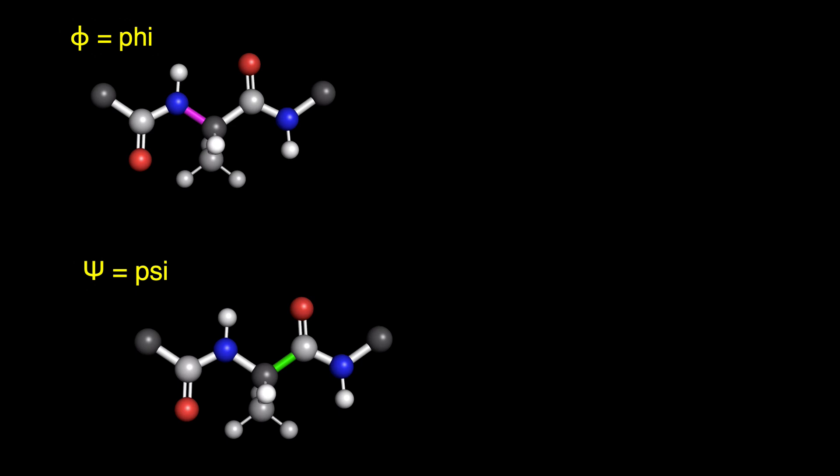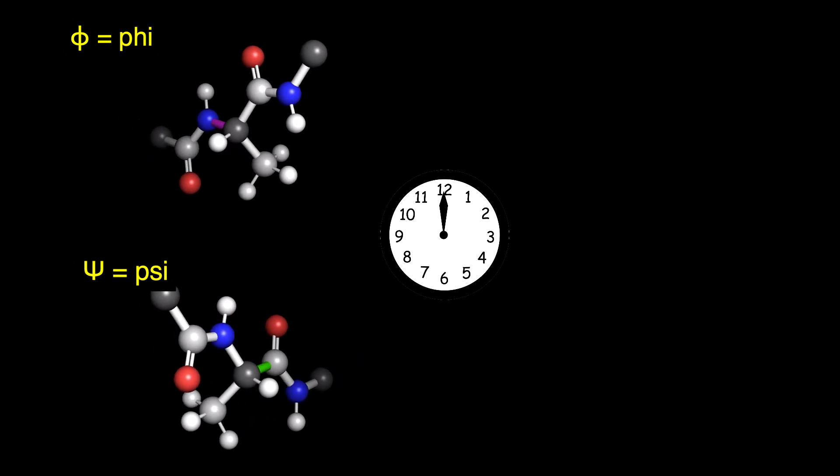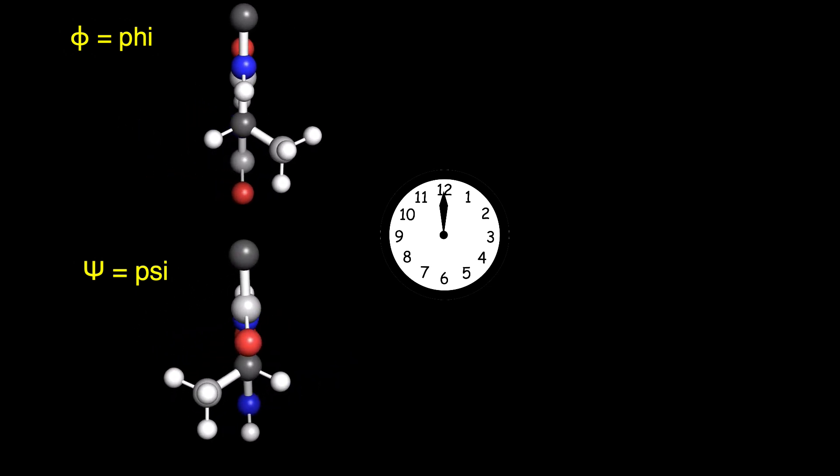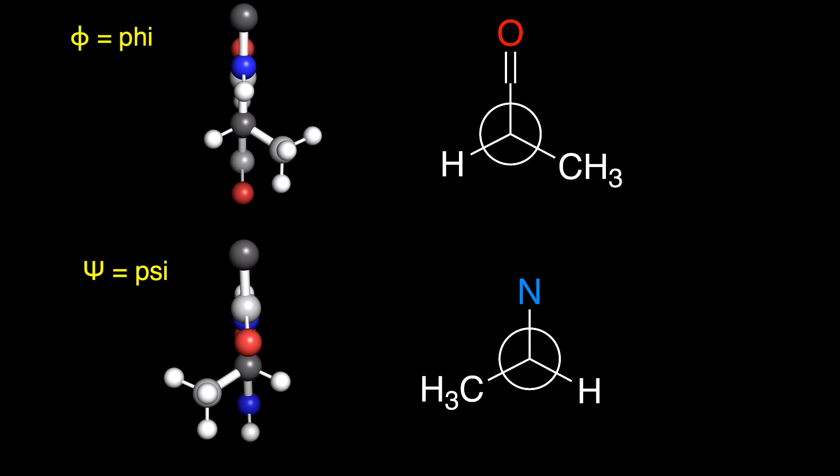To translate this to our Newman projection, we can imagine the model as a clock. Looking directly down our bond of interest, we'll need to make sure to place the nitrogen, or carbonyl carbon that's attached to the alpha carbon, at noon. If we draw out just the front carbon of our Newman projection, this group has to point up.